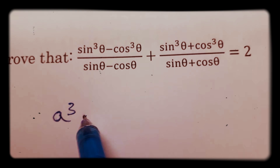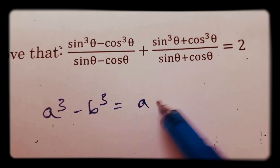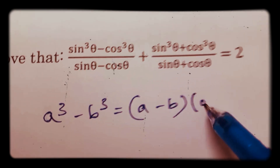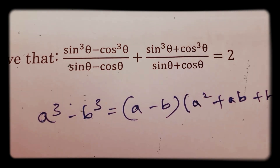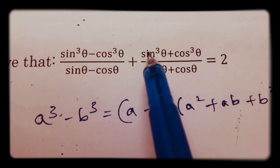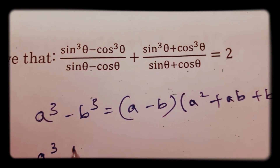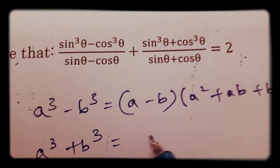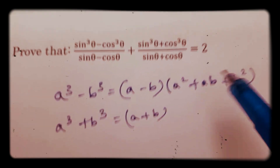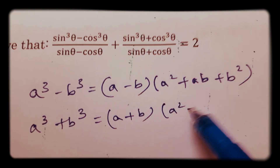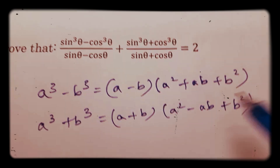The formula for a cube minus b cube is: a minus b, into a square plus ab plus b square. And the formula for a cube plus b cube is: a plus b, into a square minus ab plus b square.